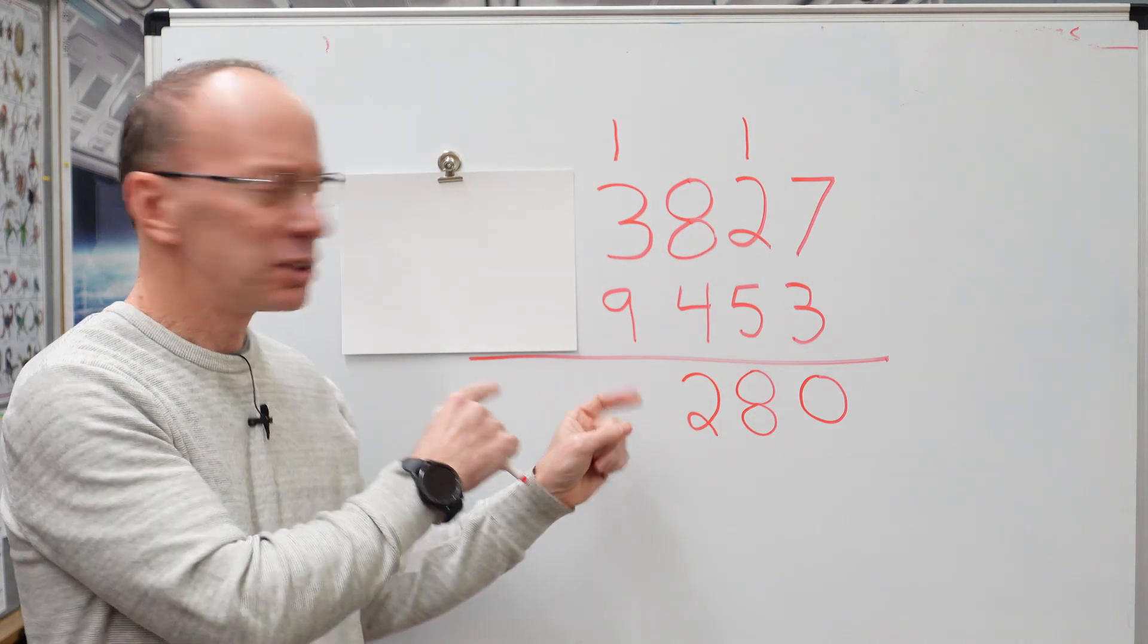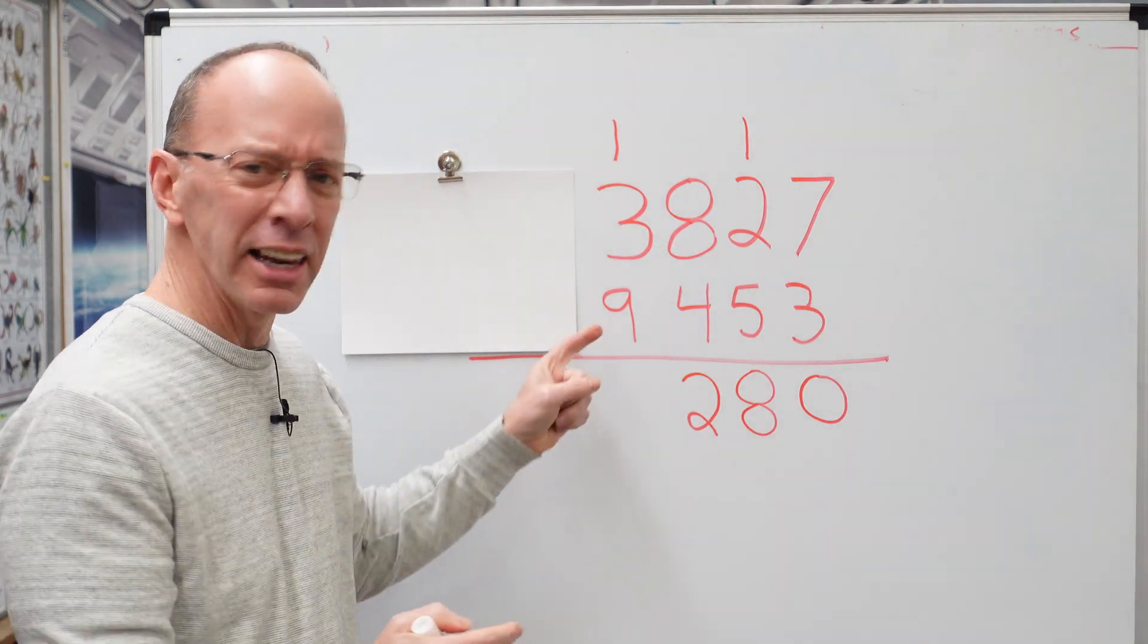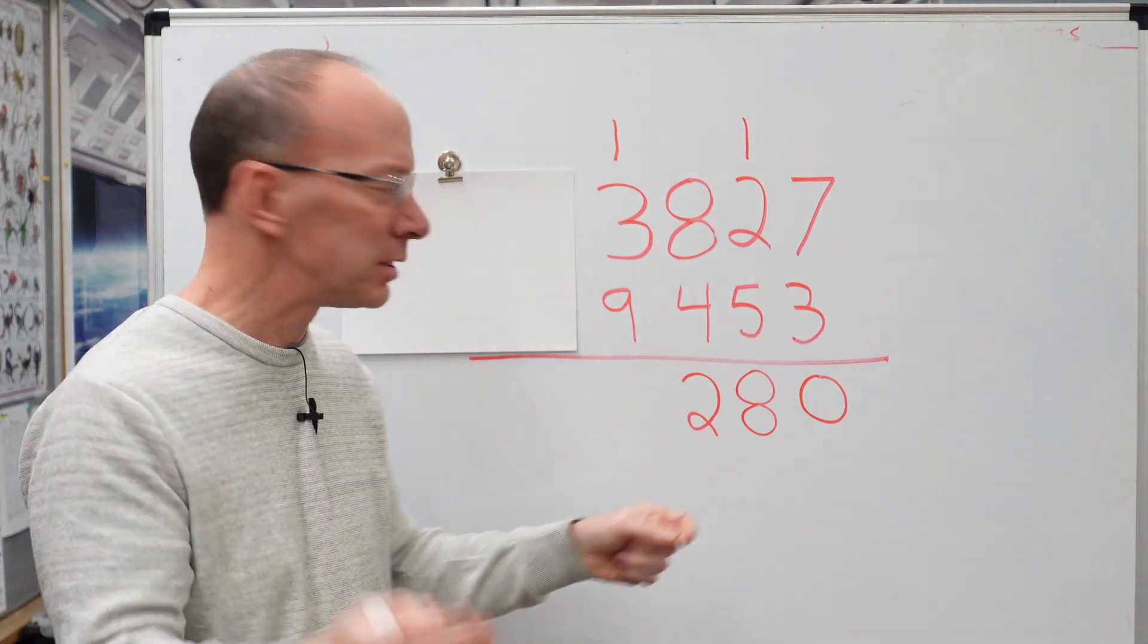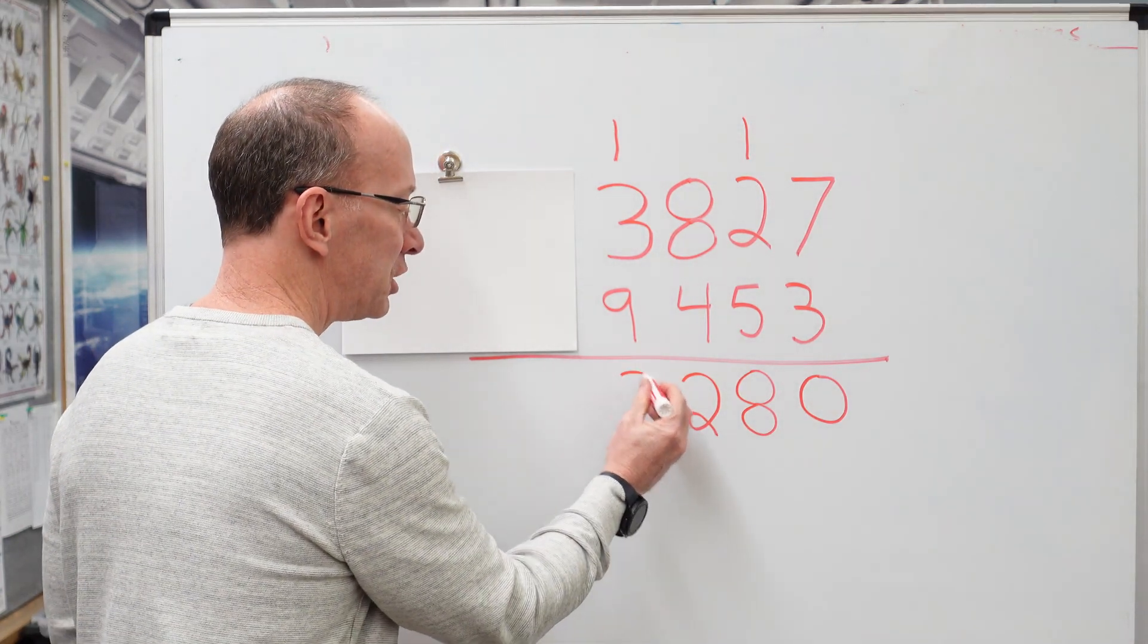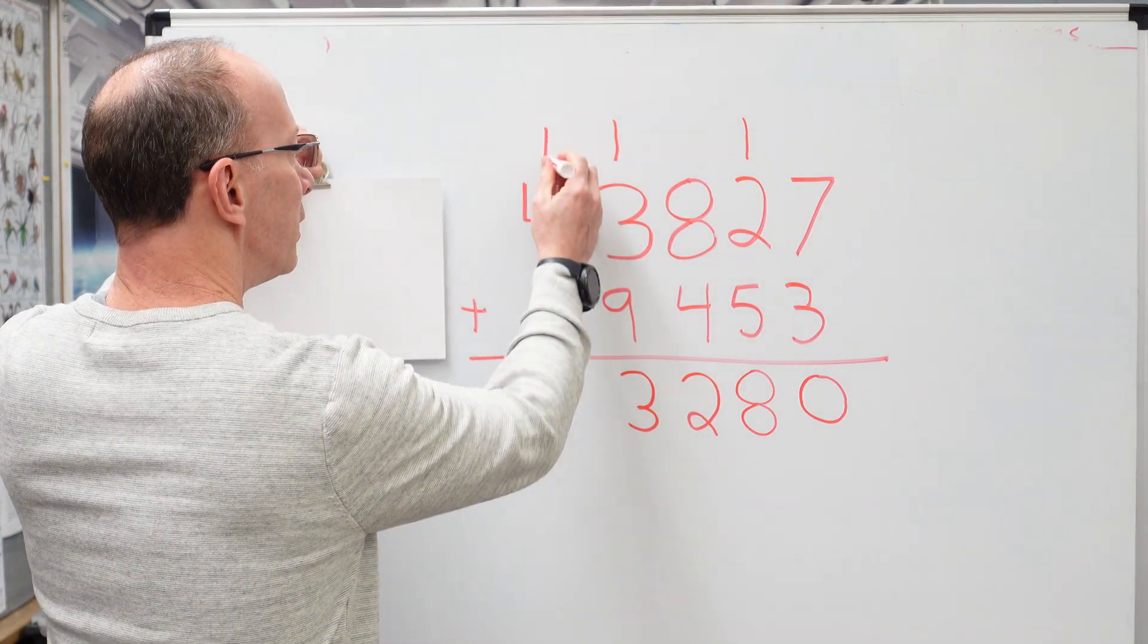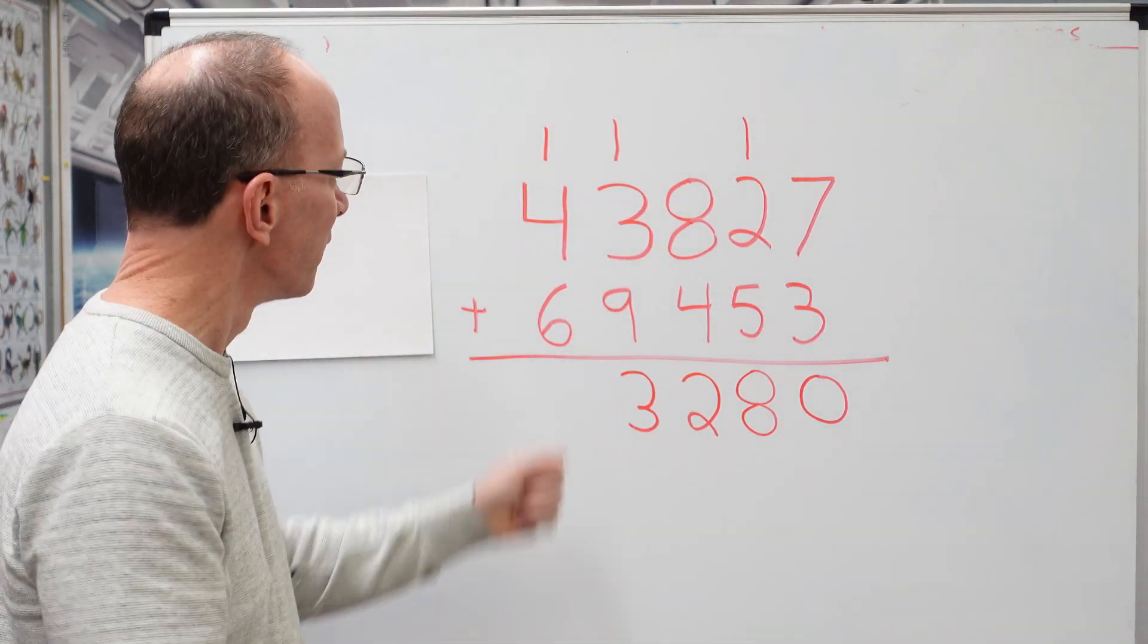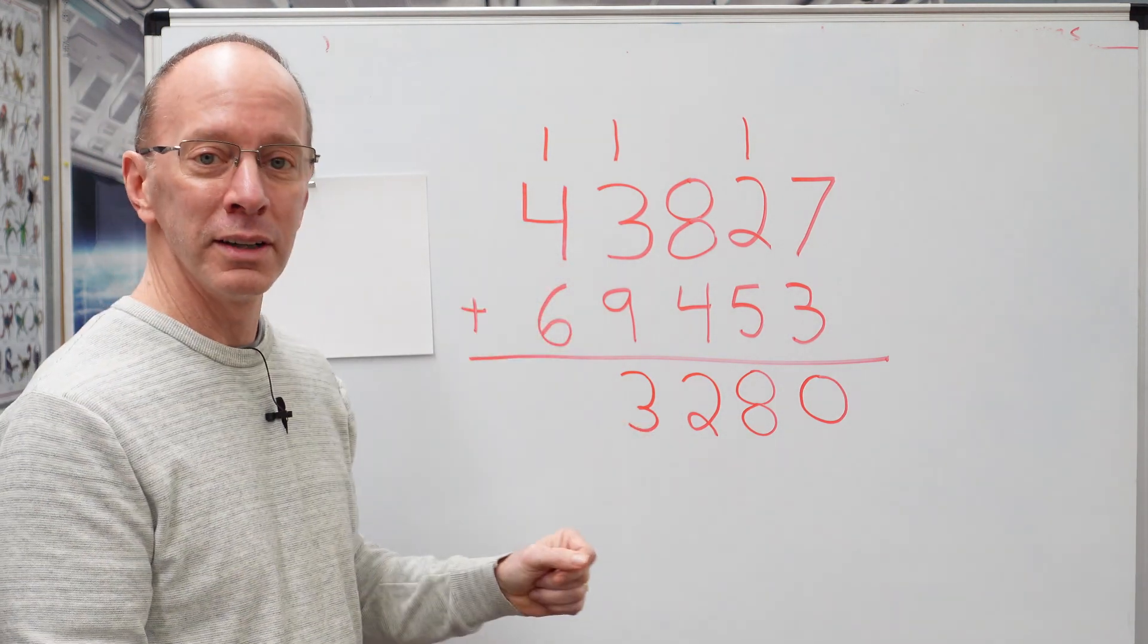Now we've got to add these numbers. Do you see two numbers that we would probably add right away? Yeah. I like adding that nine and a one. That makes it a ten. Very easy to work with. Plus six plus four, ten plus the one, eleven.